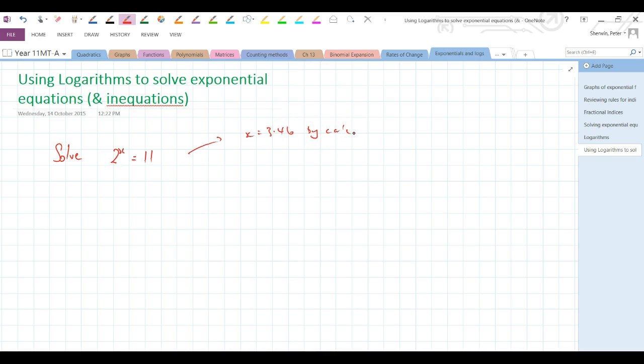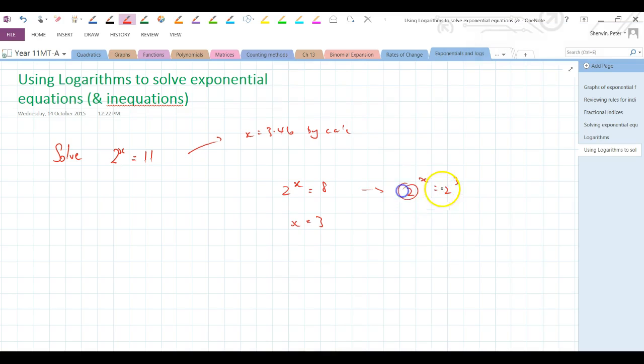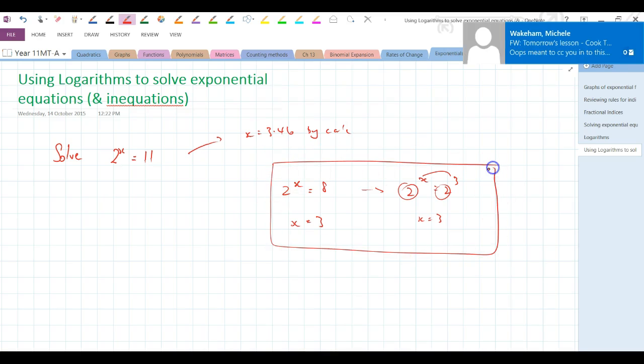x equals 3.46 by calculator, but this whole section is assuming no calculator, these are non-calculator skills. So we don't have a calculator at our disposal. We know what the answer is now so we can check on that in a minute. But also, it's not a whole number, so we don't need to use logarithms if it's solve 2 to the power of x equals 8 because we can see it. We can see that x equals 3, or we can write it as 2 to the power of x equals 2 to the power of 3, so we get our bases the same and then we just equate our coefficients. That's easy, that doesn't need a great discussion.